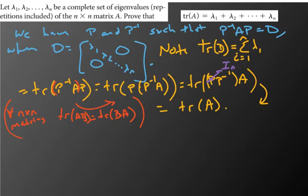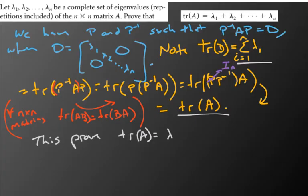So that basically proves it. If you backtrack this thing, you've got the trace of that diagonal matrix, which is the sum of the diagonal values, equaling trace of A. So this proves trace of A equals lambda 1 plus lambda 2 plus... plus lambda n. And that does it.